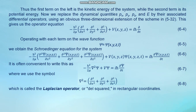We replace the dynamical quantities p_x, p_y, p_z, and E by the associated differential operators using the three-dimensional extension of the scheme in equation 5.32. This gives the operator equation 6.4. Operating with each term on the wave function psi(x,y,z,t), we obtain the Schrödinger equation for the system, formula 6.6. It is often convenient to write this using the Laplacian operator del-squared in rectangular coordinates, formula 6.8.